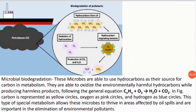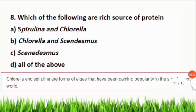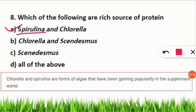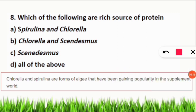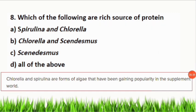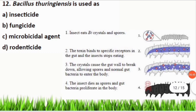Q: Which are rich sources of single-cell protein? A: Spirulina and Chlorella species — both forms of algae gaining worldwide popularity as food supplements. Spirulina is used as a food supplement by space agencies; astronauts use it as a rich, compact protein source.